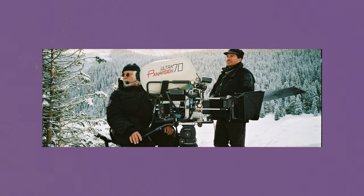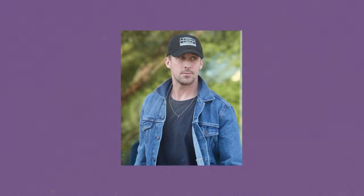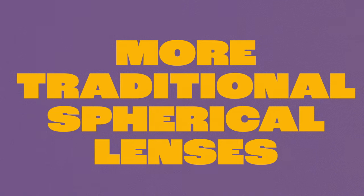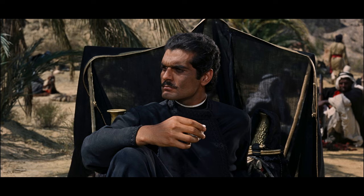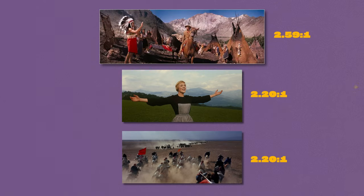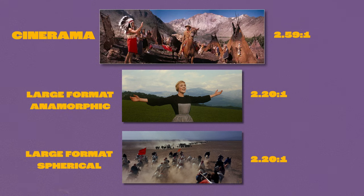Sticking with the 60s a little longer — remember CinemaScope and anamorphic lenses? Around that time, a small company called Panavision began manufacturing anamorphic lenses for 35mm cameras, as well as developing camera technologies to capture large-format prints using 65 and 70mm film with traditional spherical lenses. Lawrence of Arabia debuted in 1962 with an aspect ratio of 2.20 to 1, the same as The Sound of Music — all within a couple of years of each other, but all utilizing very different technologies to achieve that wide look.